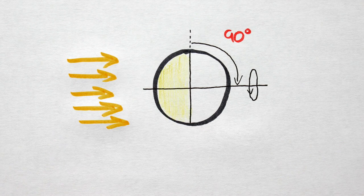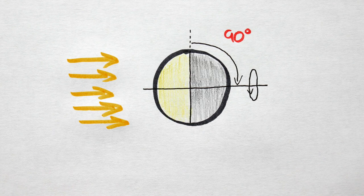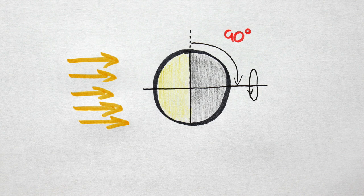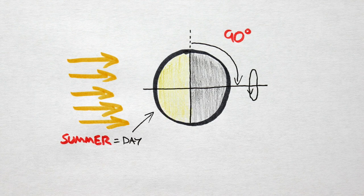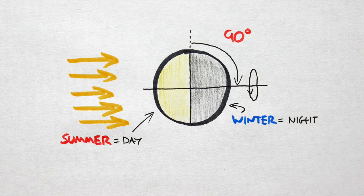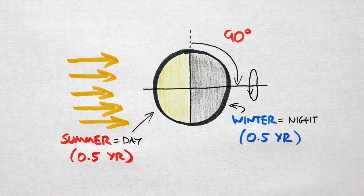Such a planet would literally be hell to live on. The day-night cycle would be equivalent to the seasonal cycle. That is, when it's summer, it's daytime. And when it's winter, it's nighttime. With each roughly being half a year long.